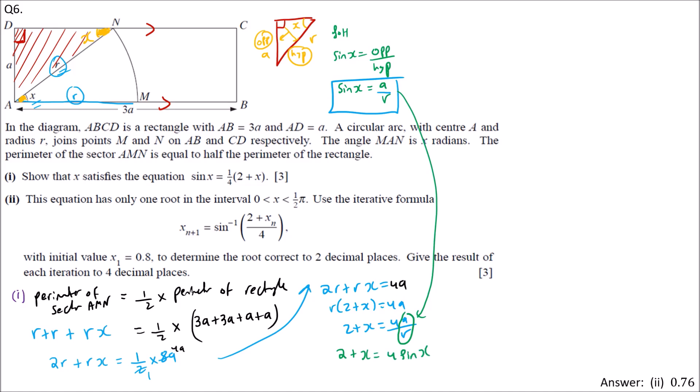A over R, we can replace with sin X. So 2 plus X equals 4 sin X. If we make sin X the subject, sin X equals (2 plus X)/4. That's what we need to show for the first part.